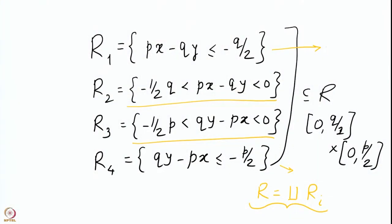Of course, if you are looking at the set-theoretic structure of rectangle R, then it is not quite the union of R1, R2, R3, R4 because the boundary lines have been omitted. But without worrying about the lines, if you are looking at the lattice points, then this union is valid for lattice points.